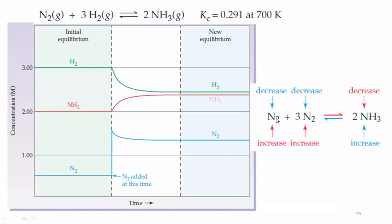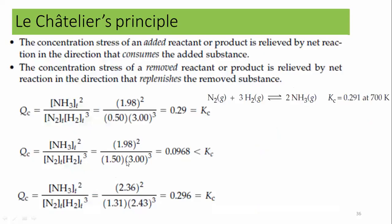You increased the concentration of N₂; with the passage of time, the concentration of reactants decreases and the concentration of ammonia increases. At the new equilibrium, ammonia concentration increased, N₂ decreased from 1.5 to 1.31, and H₂ decreased from 3 to 2.43.